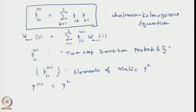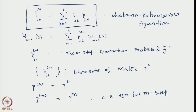This is a very important development: once we have the one-step transition probability matrix P, we just square it to automatically obtain the two-step transition probability matrix. In general, one can construct an m-step transition probability matrix as P to the power m, understood in the matrix multiplication sense. This is the further generalized Chapman-Kolmogorov equation for the n-step transition matrix.